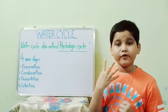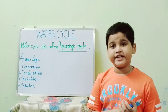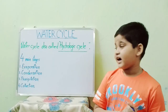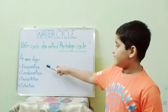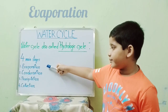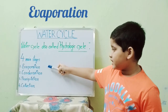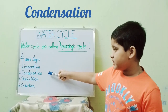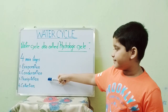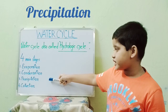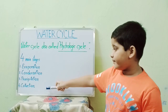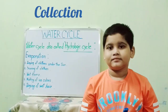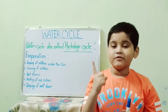The four main stages of the water cycle are: 1. Evaporation, 2. Condensation, 3. Precipitation, and 4. Collection.